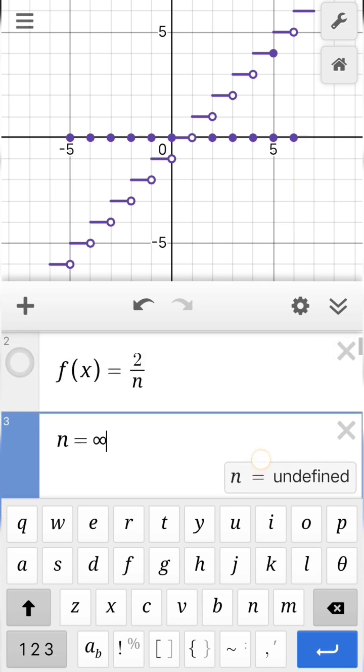Now when n is infinity and our function is 2 by n, our greatest integer of this kind of function is 0.